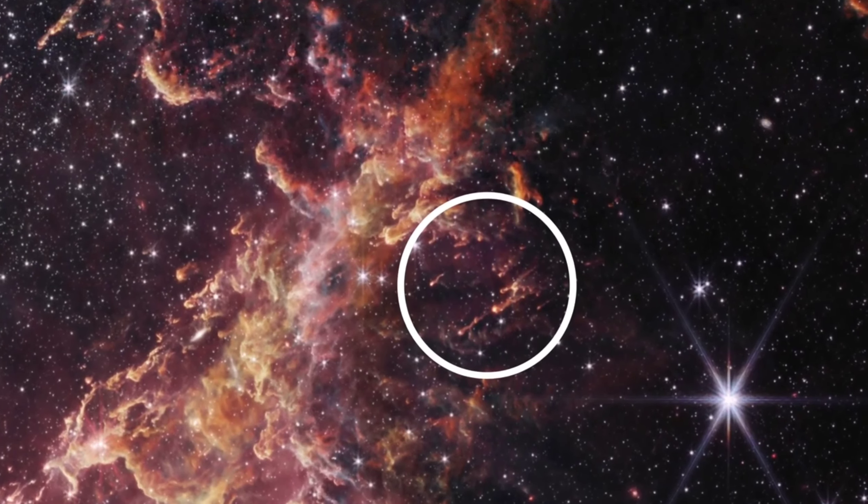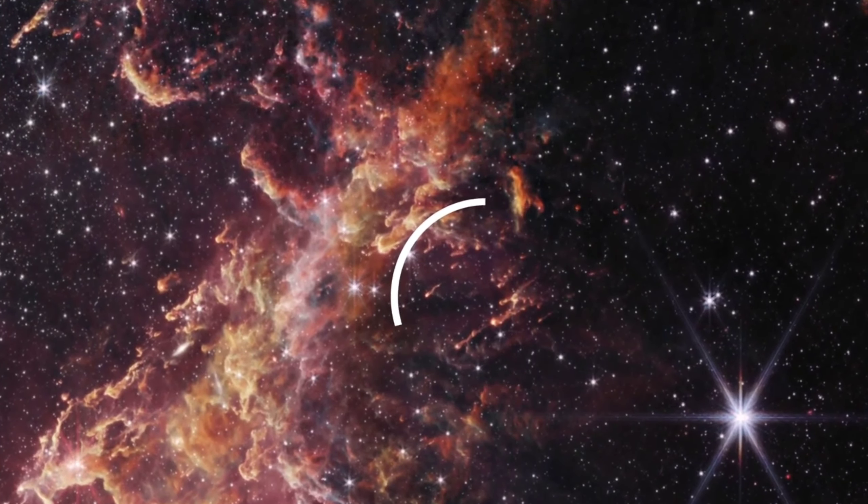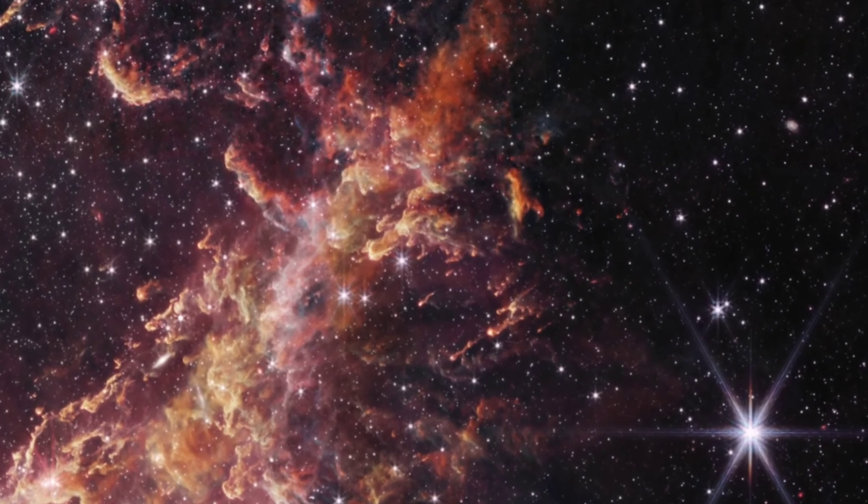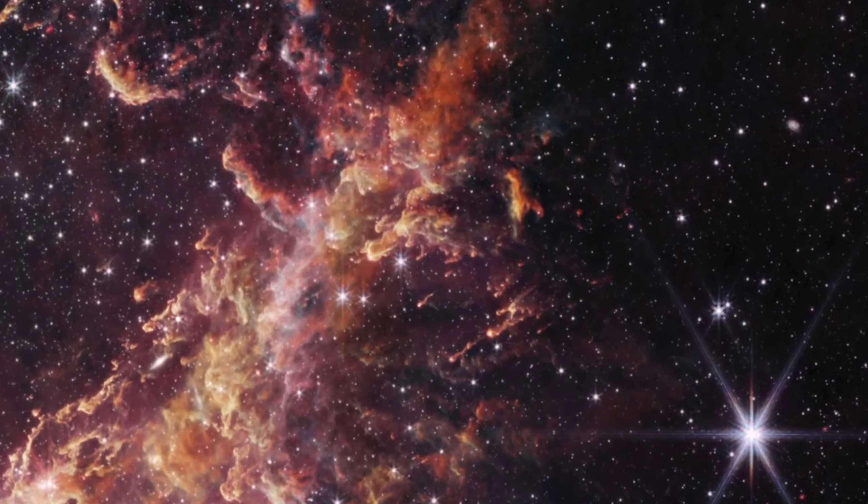These wisps are more evidence of that environmental change. Winds from nearby stars are blowing away material that surrounds still forming stars, leaving these small structures behind.